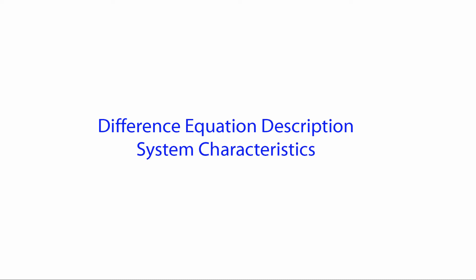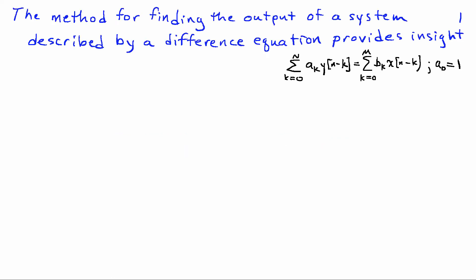A difference equation description for a system reveals a lot about the system characteristics. Recall the difference equation is of the form: the sum from k equals 0 to N of a_k times y(n-k), where y is the system output, equals the sum from k equals 0 to M of b_k times x(n-k), where x is the system input. We assume that a_0 equals 1.